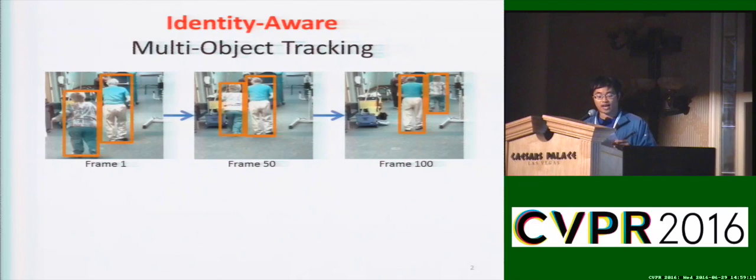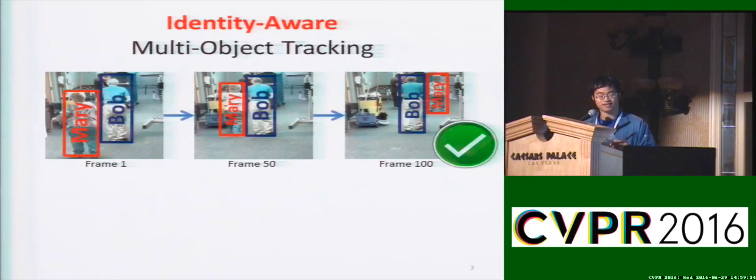The task of Identity-Aware Multi-Object Tracking is to not only track each object, but also assign the correct identity to each object. For example, given the person detections from multiple frames, we want to know which detections belong to Bob and which belong to Mary. In this example, the trajectory of the man is assigned the identity Bob and the woman assigned Mary, which is correct.